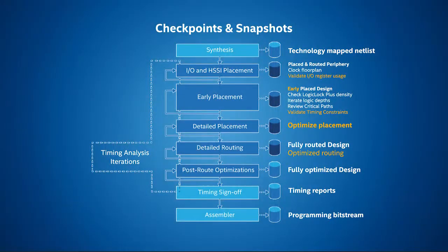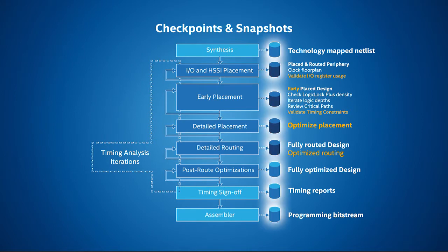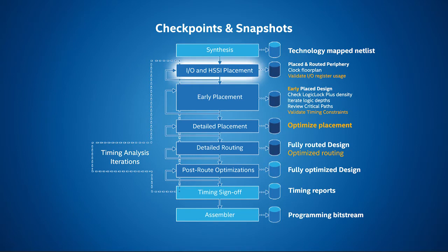I want to introduce a couple of useful terms. A checkpoint is a stage in the flow where you can stop and do something useful. Snapshots are the output database at a particular checkpoint. After I/O and HSI placement in Blueprint, you can run timing analysis from the fabric to the I/O. You can check if you have the correct timing constraints. In Arria 10, you can even plan and assign the final legal clock domains.